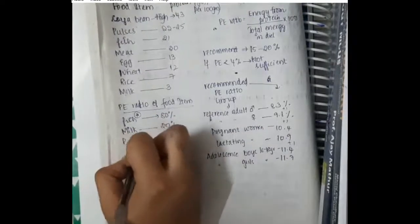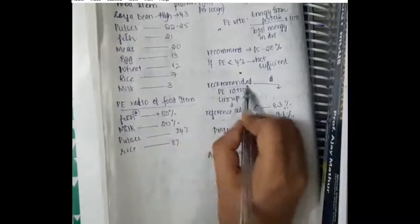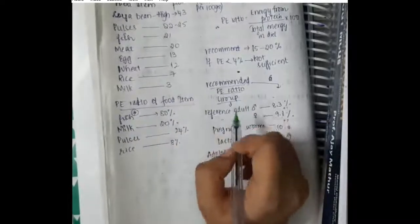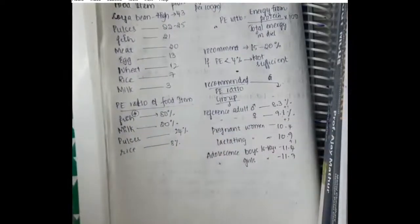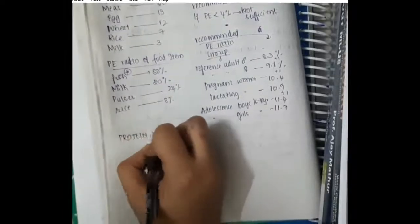Protein energy ratio of food items: fish has 80 percent, milk has 20 percent, pulses have 24 percent, and rice has 8 percent of proteins.